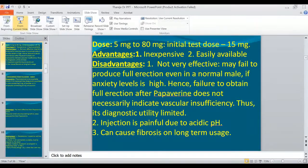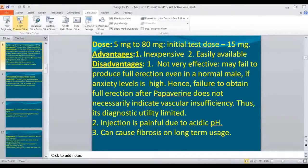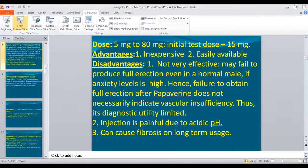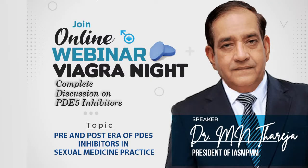The advantage of papaverine is that it is easily available and inexpensive, but it is less effective — it fails to produce full erection even in normal males. If the anxiety level is high, failure to obtain full erection after papaverine does not necessarily indicate vascular insufficiency, so its diagnostic value is limited. Also, the injection is painful due to its acidic pH.